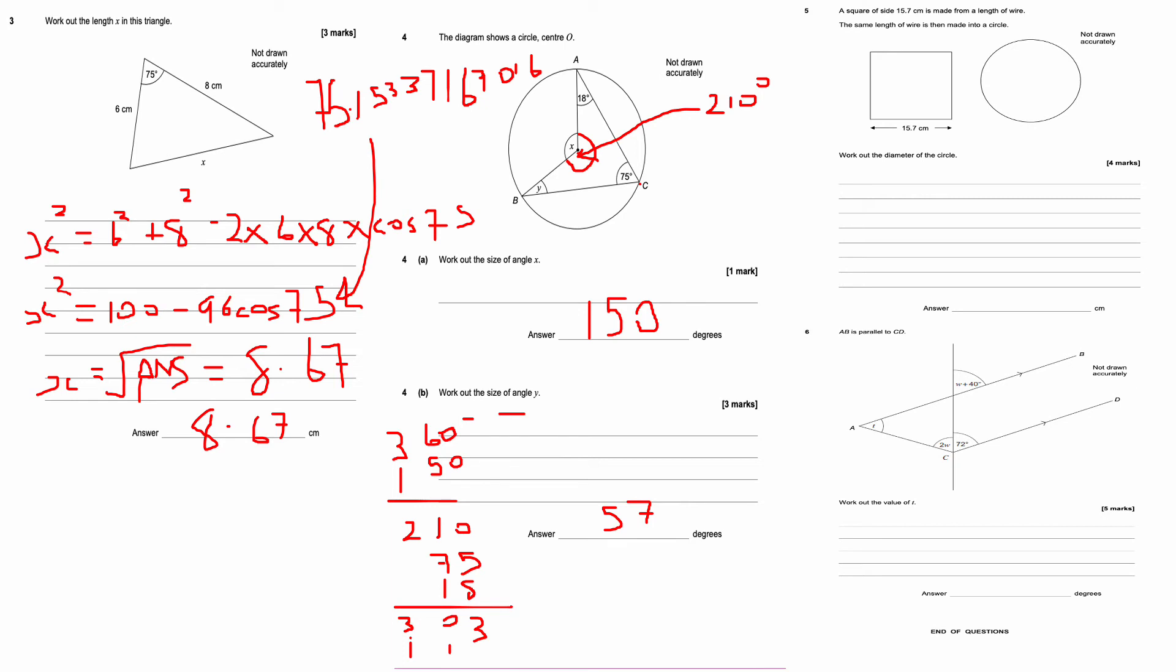This is question number five. A square of size 15.7 is made from a length of wires. The same length of wires is made into a circle. Work out the diameter of this circle. So this is a pretty tricky question. I'll come back to this one in a second whilst I have a little think about it.